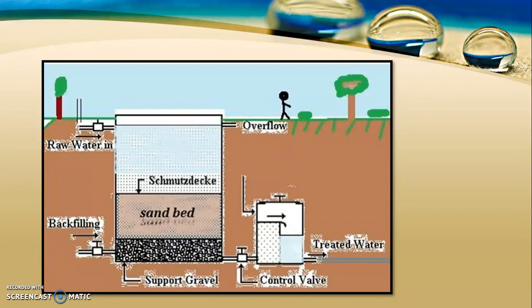However, slow sand filters require a larger area, have a very low rate of filtration, and their cleaning is very tedious. For cleaning a slow sand filter, the entire sand layer must be scrapped out, washed, cleaned, dried, and replaced, requiring much manual labor. Operation and maintenance problems and clogging of pores are significant drawbacks. To avoid these issues, rapid sand filters are nowadays used for filtration in water treatment plants.